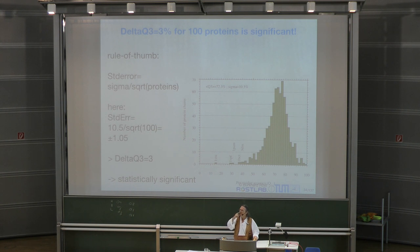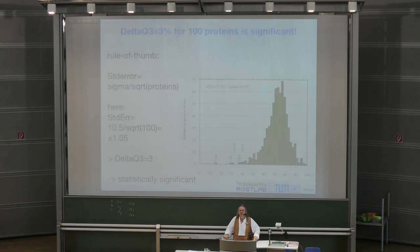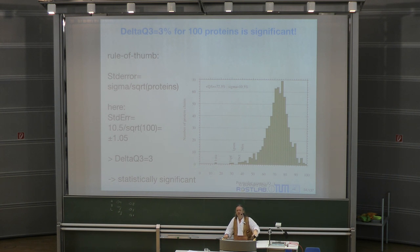That gets us back to the issue of science. Why was it statistically significant? Because one standard error is one percentage point, two standard error differences covers 90% of the data, and three standard errors — roughly three percentage points — is 99% of the data: statistical significance of 10 to the minus 2, or roughly 1 in 100.